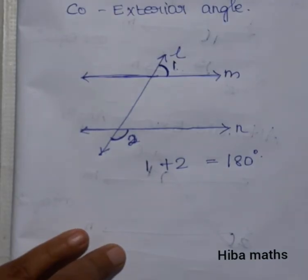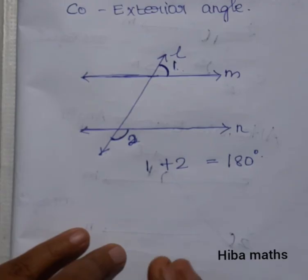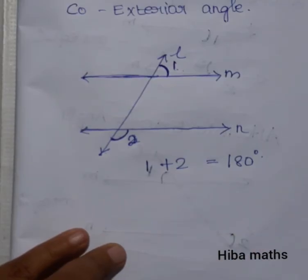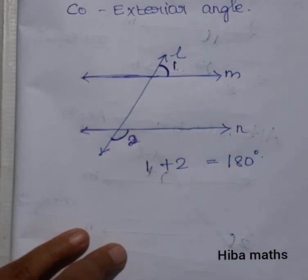So we have covered all five types of angles in the 7th standard chapter 5.2 — corresponding, alternate interior, alternate exterior, co-interior, and co-exterior angles. I hope the angles are clear to you. Please like and share this video, subscribe to our channel, and click the bell icon. Thank you so much for watching. Bye-bye.